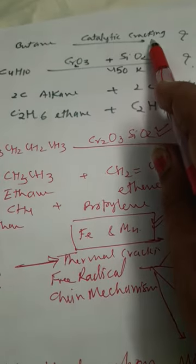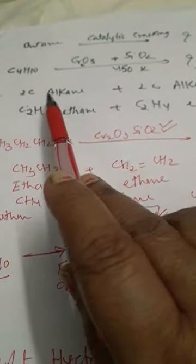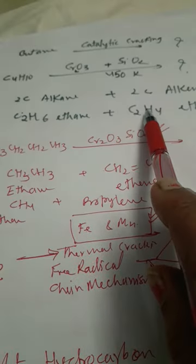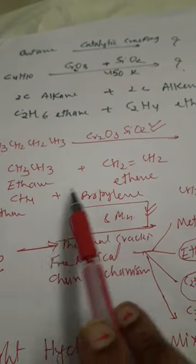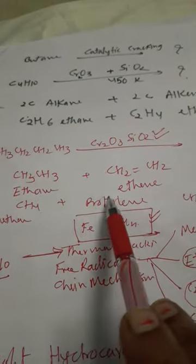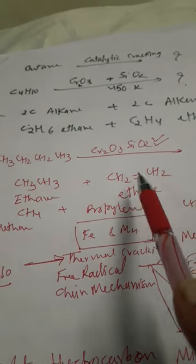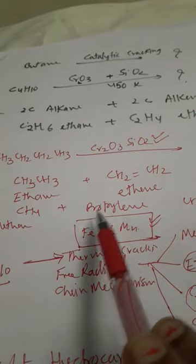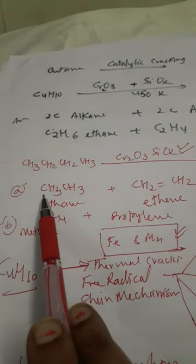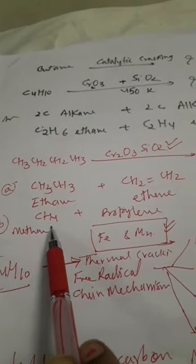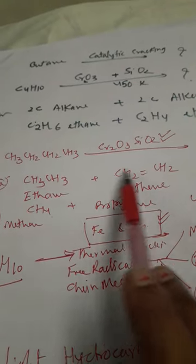Butane on catalytic cracking, what the products are: 2 carbon alkane and 2 carbon alkene, as well as some amount of methane and propylene, 1 carbon and 3 carbon. In both cases, this alkene is 2 carbon alkene and 3 carbon alkene, and the rest carbon is here in four. They are forming alkane here, ethane and ethene, methane and this propylene.